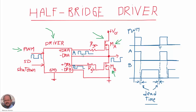So we need to generate these two outputs, A and B. In output A, we are going to have a high-level voltage when we want to activate transistor A, and this corresponds with the PWM input equal to 1. For output B, we have to generate a signal which is going to have a high voltage level when the PWM input is equal to 0. So we have here the waveforms that we want to generate, but we also want another thing: we want to have some dead time between the activation of transistor A and the activation of transistor B.